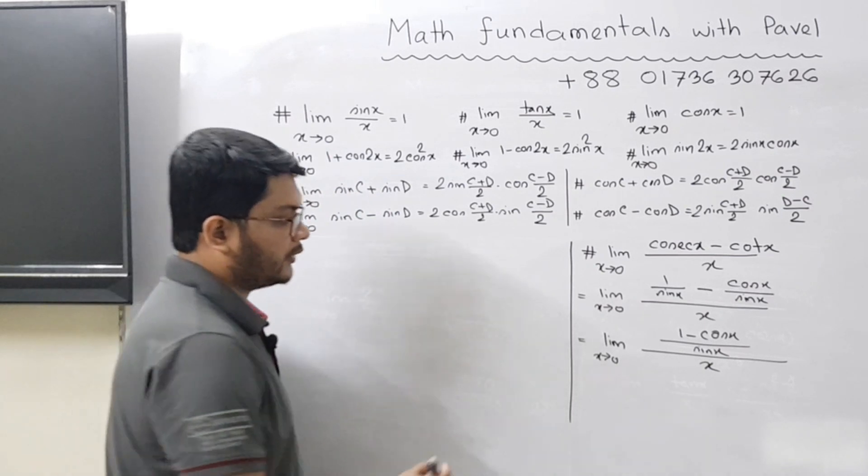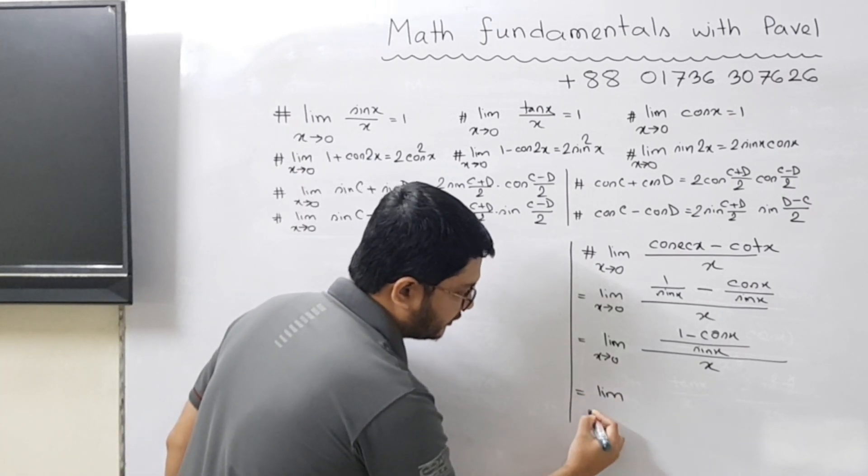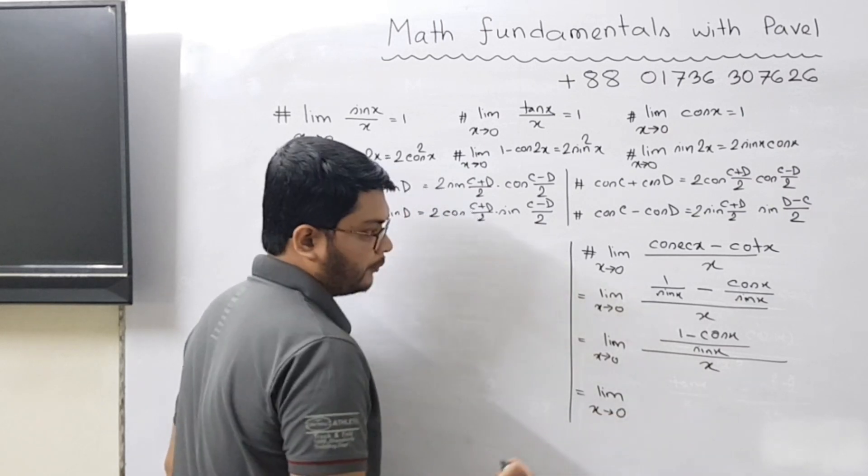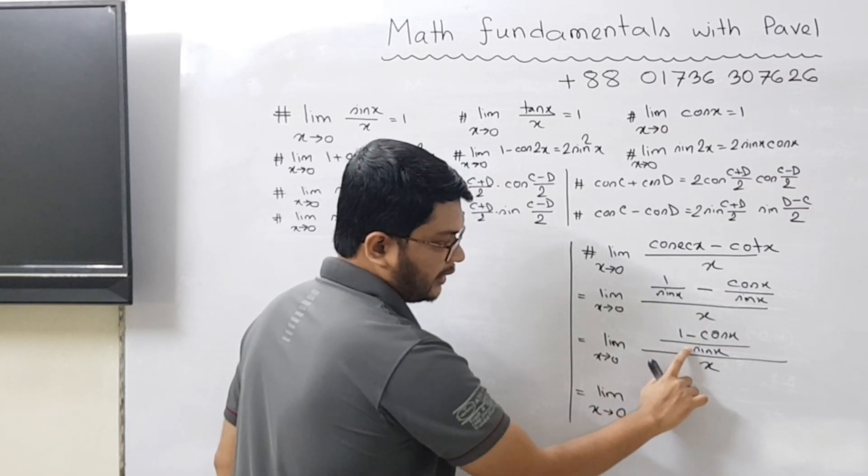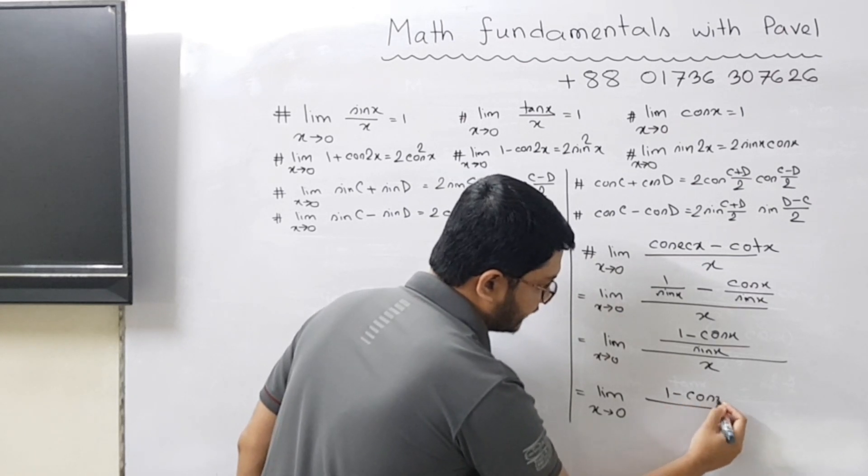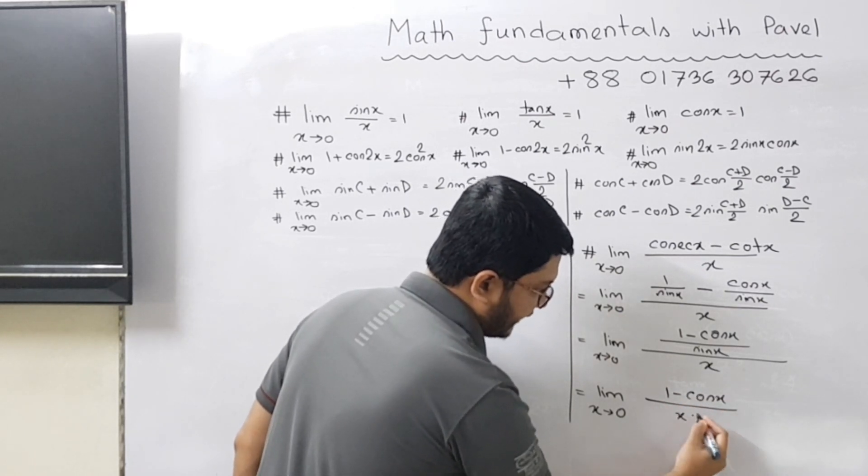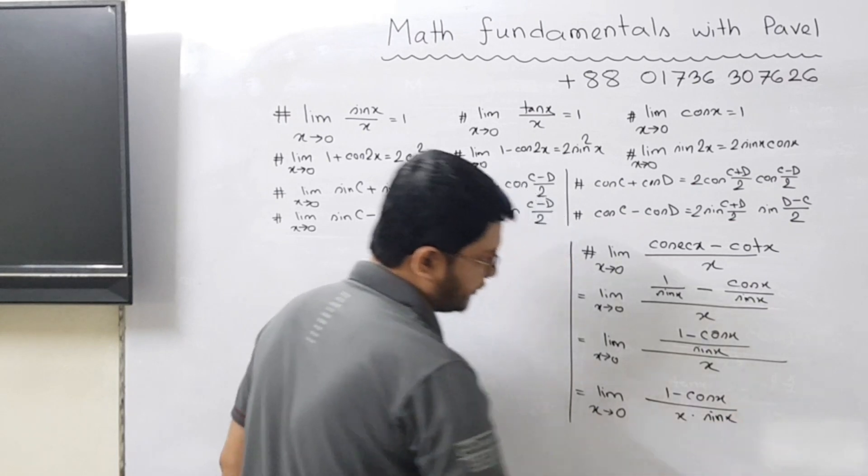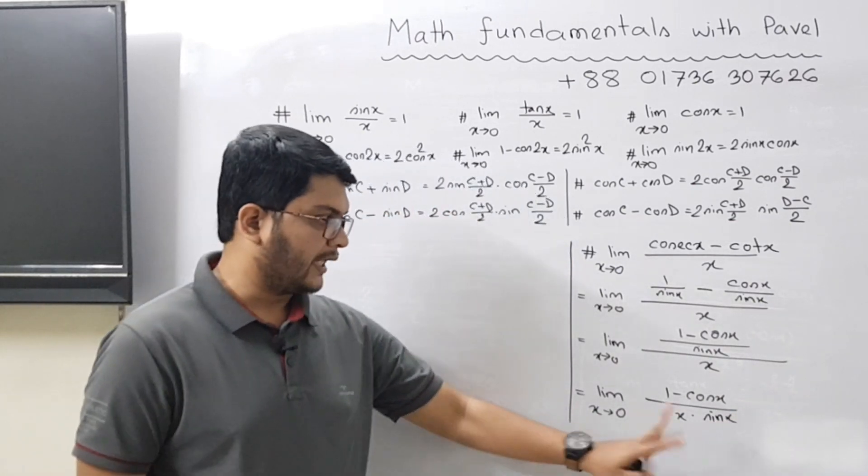Now what you can do is write it as limit x tends to 0. You can bring this sin x here, so 1 minus cos x divided by x times sin x.